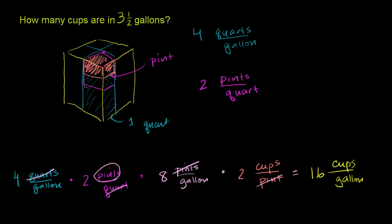Now, we just figured out how many cups there are per gallon. That makes sense. This section right here is exactly 1 sixteenth of this entire cube, this entire gallon. But we haven't even answered our question. We want to figure out how many cups there are in 3 and a half gallons.